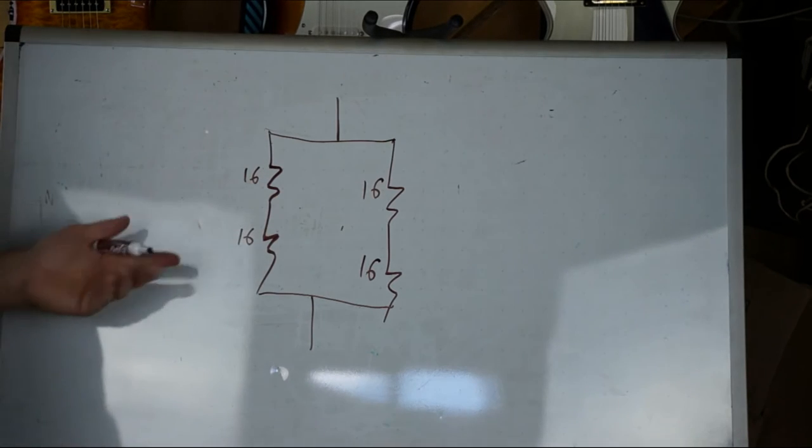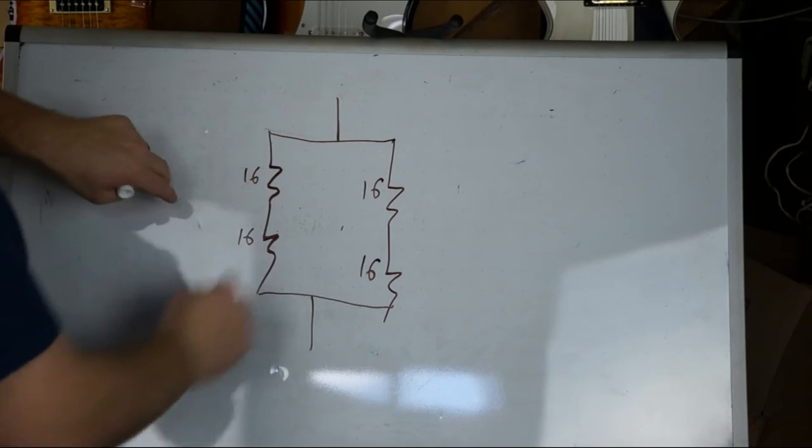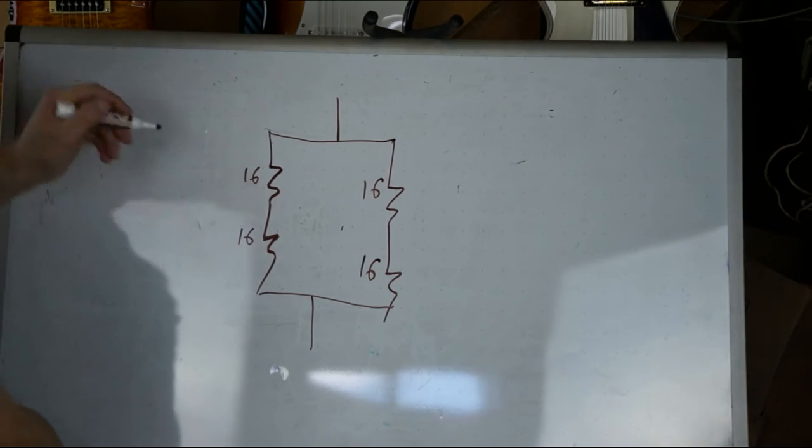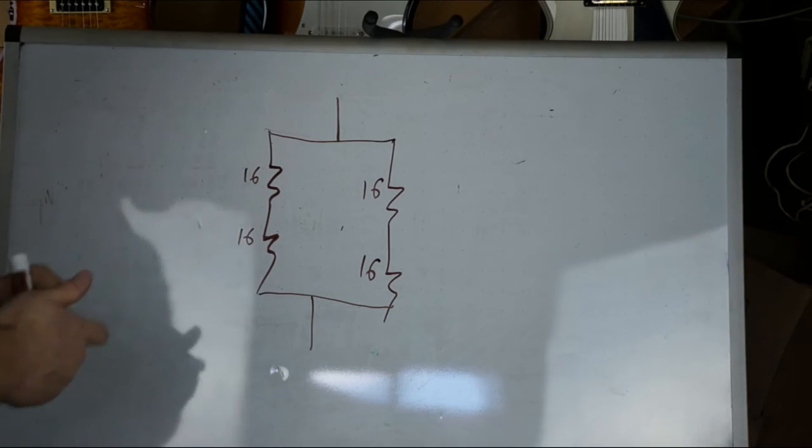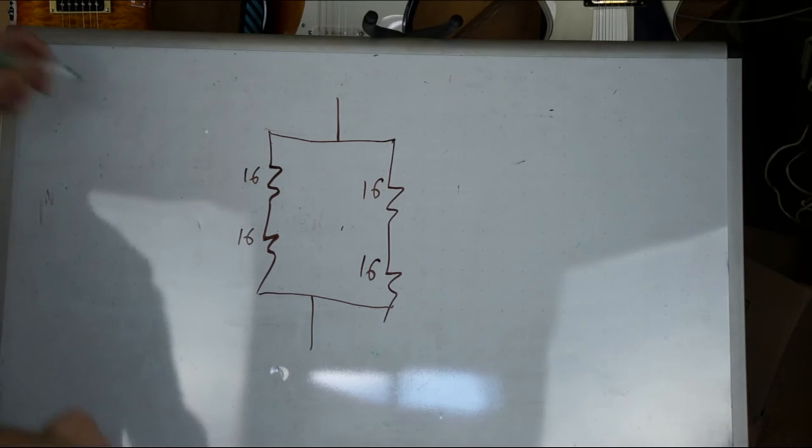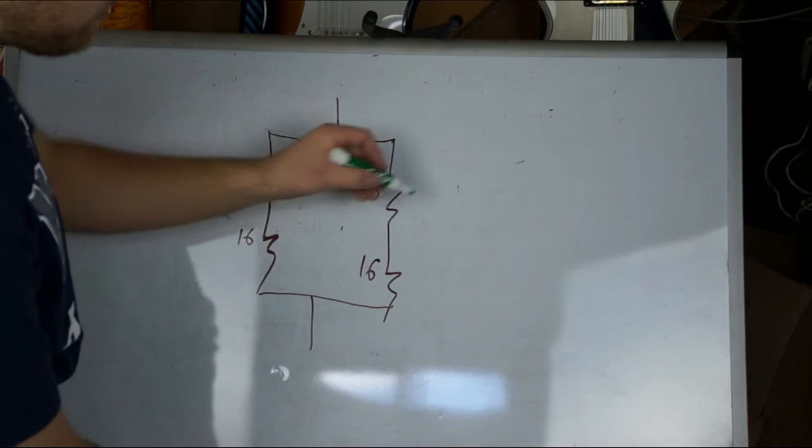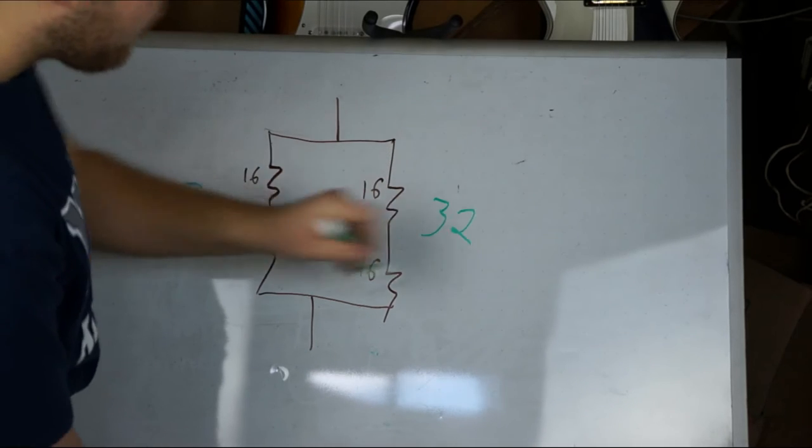You want to find an equivalent impedance. So break this up into two problems, right? You've got series. So this is going to be, let me do this in a different color. These two are going to be 32. These two are going to be 32, right? Just 16 plus 16.